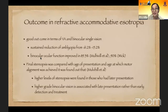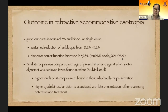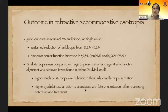What is the outcome in refractive accommodative isotropia? The outcome is quite good in terms of vision and binocular single vision. One study showed that sustained reduction of amblyopia went from 61.2% down to 15.2% with correction. Binocular ocular function improved in 89.3% of patients in one study, and around 90% improved in a study published by WIC. Regarding final stereopsis, higher levels were found in those who had later presentation, and higher grade of binocular vision is associated with later presentation rather than early detection and treatment.